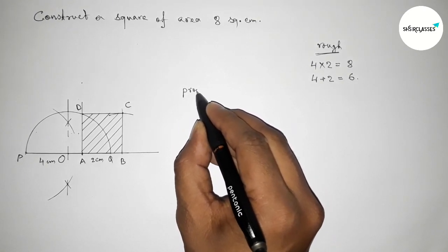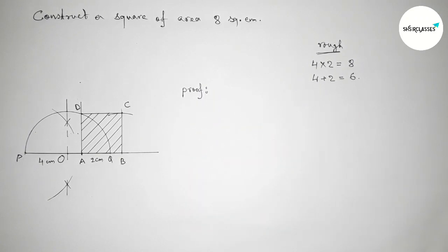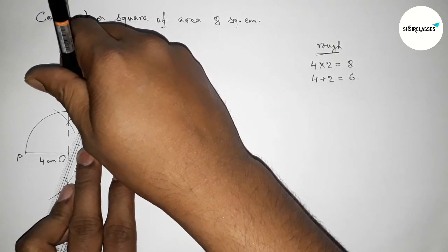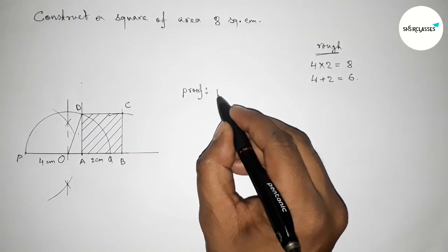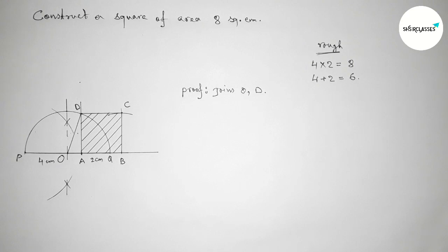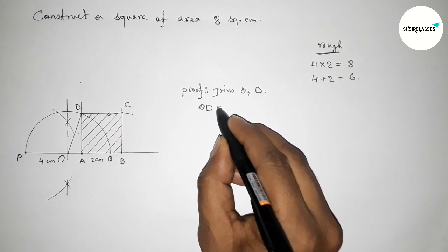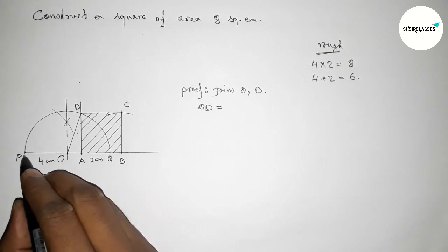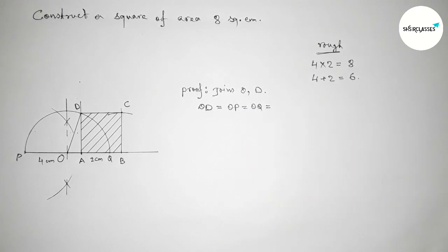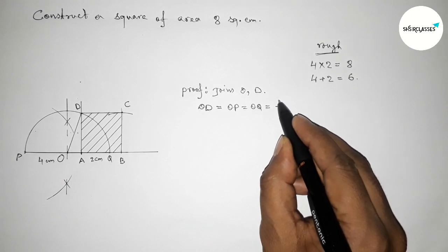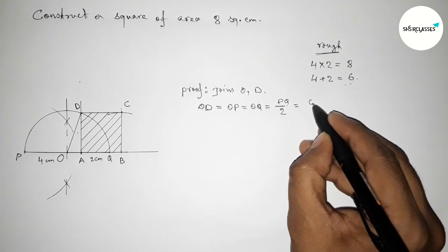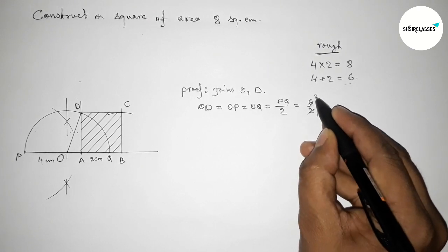Now I am going to prove this. First we have to join point O and D. Now joining point O and D. Also join OB. So now finding the length OD. OD equals to OP and OQ because these are the radii of the semicircle, which bisects the line PQ equally. So OD equals to PQ divided by 2, and the length of PQ equals to 6, so this is 6 by 2, which equals 3 centimeter.